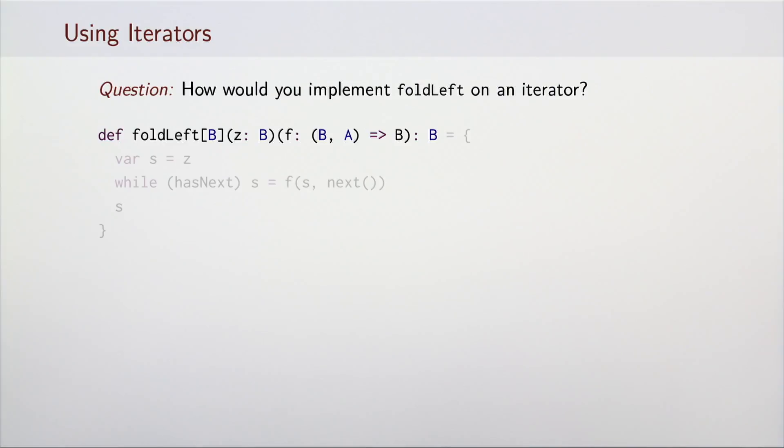Let's see the solution. Here is one possible implementation. In the first line, we declare a local variable and initialize it with the neutral element for foldLeft. Then, as long as hasNext returns true, we call next to pull out an element, apply the function f to the accumulation and assign the result back to s. When the while loop ends, the method returns the accumulation s.